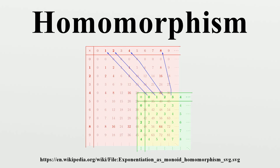For example, one may have a semi-group homomorphism between two monoids, and this will not be a monoid homomorphism if it does not map the identity of the domain to that of the codomain. The algebraic structure to be preserved may include more than one operation, and a homomorphism is required to preserve each operation.